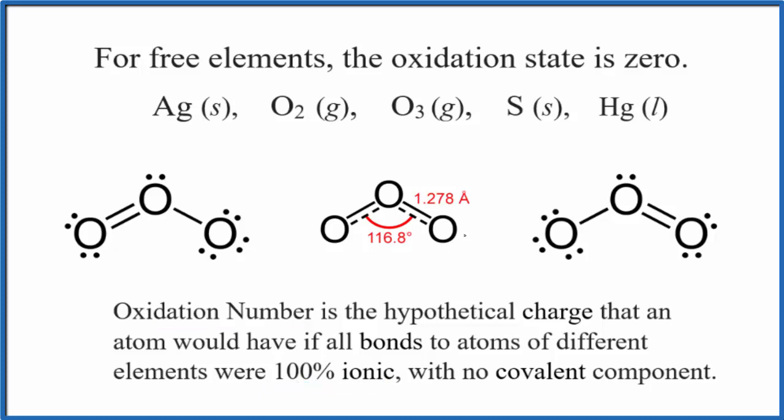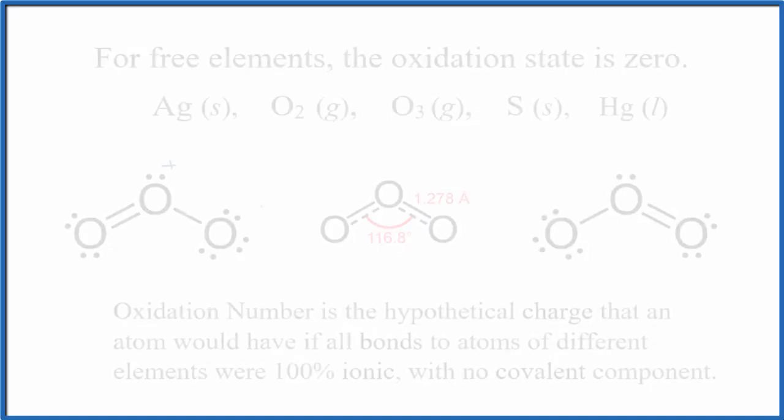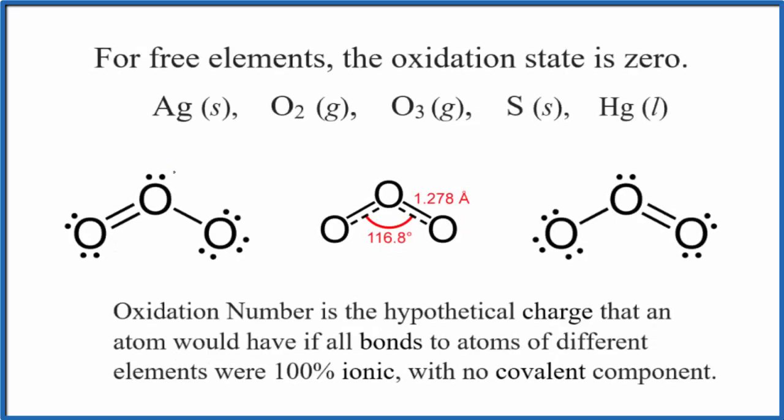useful way to think about ozone would be with formal charges. So if we calculate the formal charges, that means we're treating it as a completely covalent compound, kind of the opposite of the oxidation. This would be positive, this would be negative, over here positive